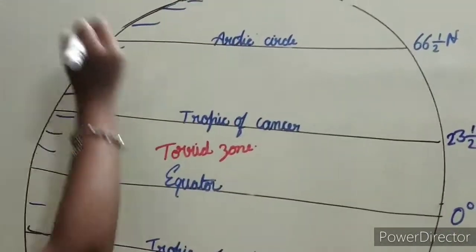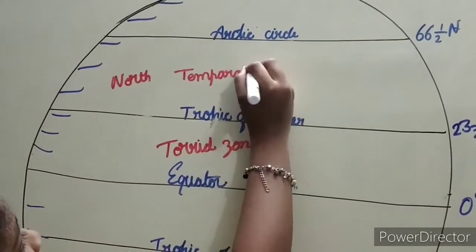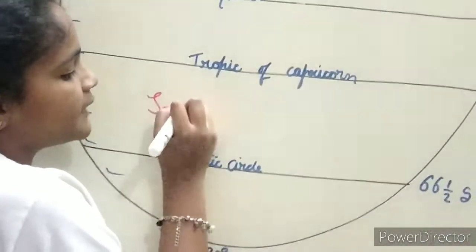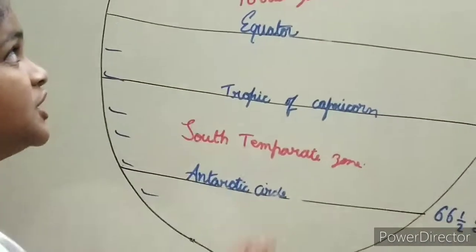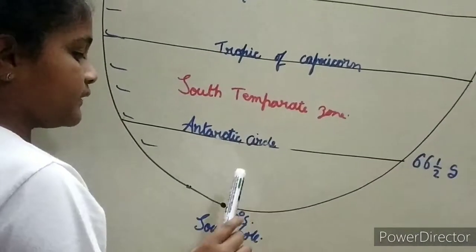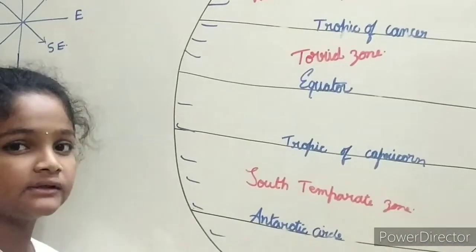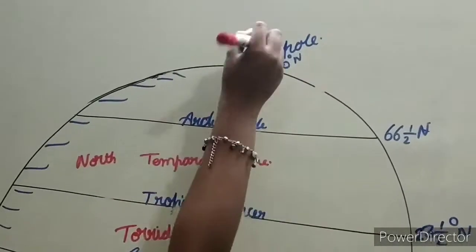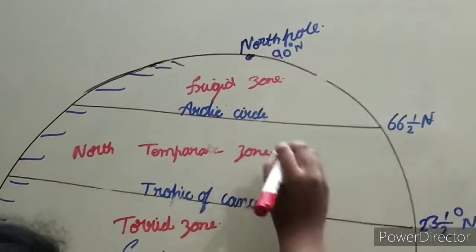Tropic of Cancer to Arctic Circle is the North Temperate Zone. Tropic of Capricorn to Antarctic Circle is the South Temperate Zone. From Arctic Circle to North Pole and Antarctic Circle to South Pole, this area is known as the Freezy Zone. Here sunlight reaches very little because sunlight falls very slantily.